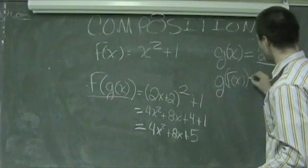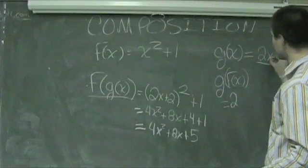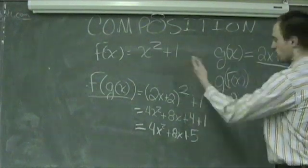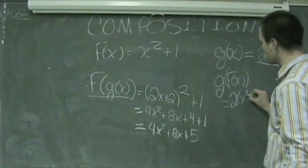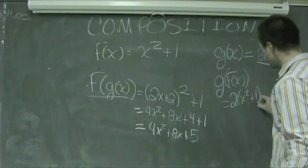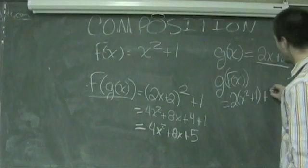Watching how this unfolds, this is going to be 2 times my x quantity, which is now the function of x. So it's 2 times quantity x squared plus 1, close parenthesis, plus 2.